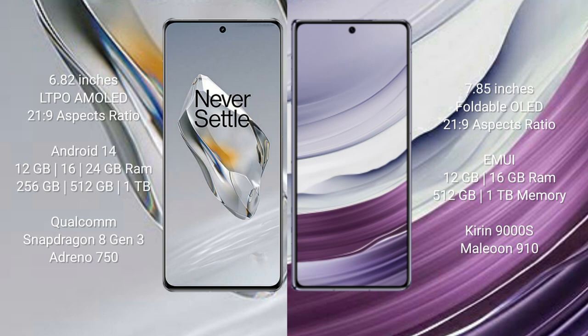OnePlus 12 comes with 12GB, 16GB, or 24GB RAM, and 256GB, 512GB, or 1TB internal storage. It features a Qualcomm Snapdragon 8 Gen 3 processor and an Adreno 750 GPU.